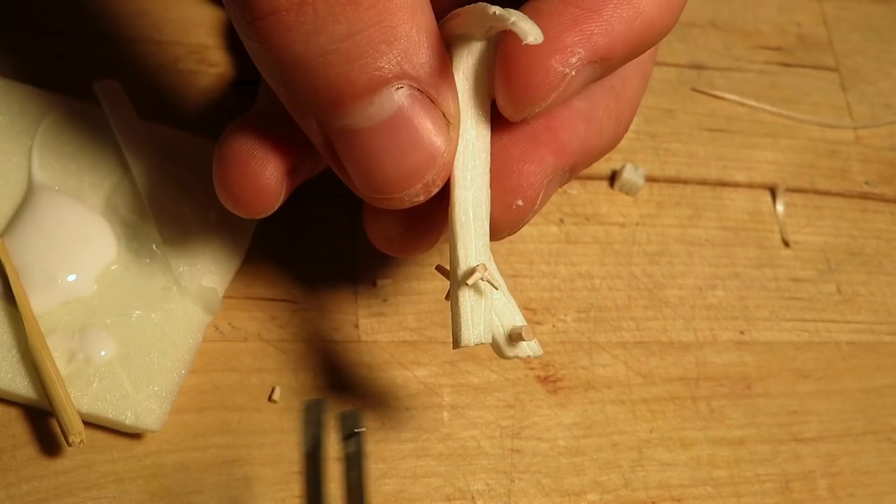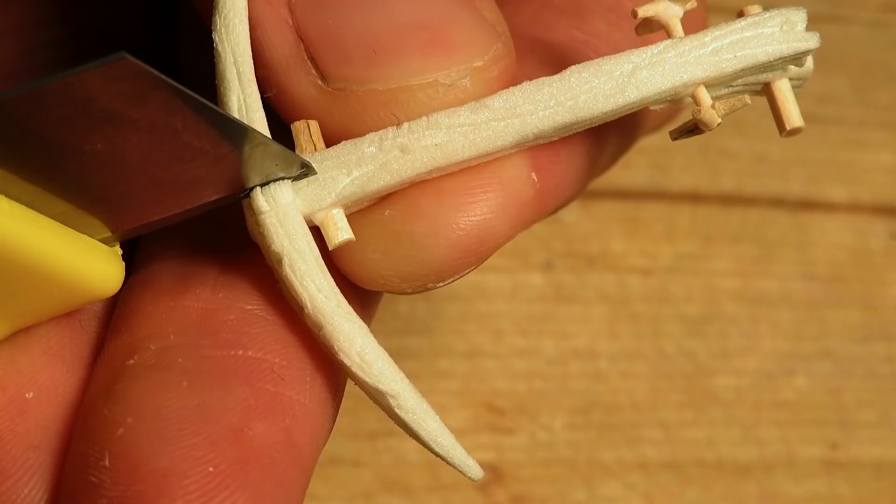These small pieces will be used to hold the bow in place with some string, but we'll come back to that later. Now let's go back to the arrow. I made a slit for the arrow and glued it in.